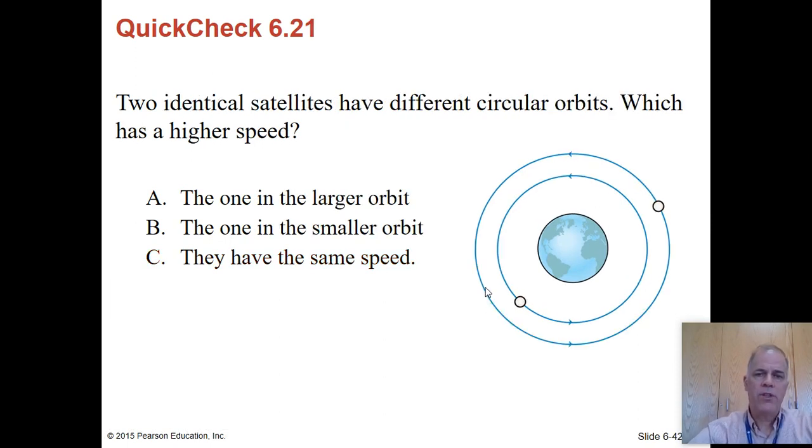Two identical satellites have different circular orbits, which has a higher speed. The one in the higher orbit or the one in the lower orbit, here's the answer. The one in the lower orbit, because it has more gravity. So it's going to experience a higher acceleration, so it's going to accelerate around the Earth more quickly, and it's just going to have to go faster so it can keep on missing the Earth.